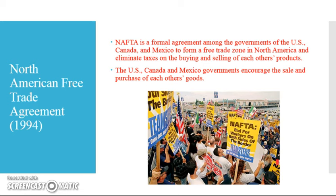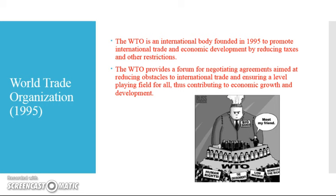Next is NAFTA, the North American Free Trade Agreement, a formal agreement passed in 1994 between the United States, Canada, and Mexico. It set up North America as a free trade zone, meaning there would be no extra taxes or tariffs on items made in any of those three countries and traded to the others. Essentially, the governments of the US, Canada, and Mexico encourage the sale and purchase of each other's goods.